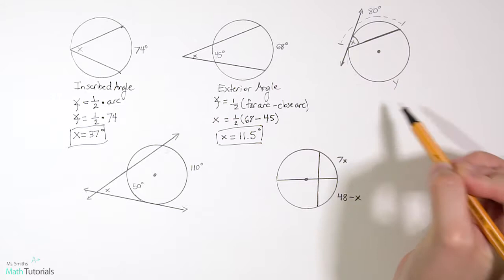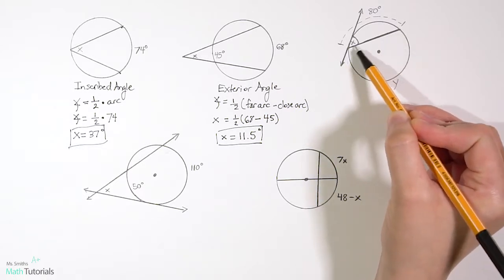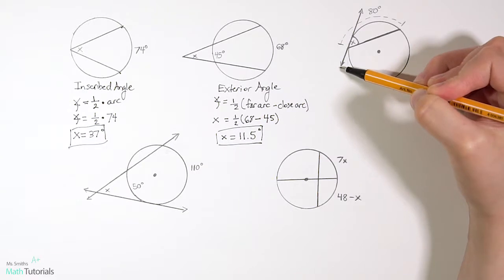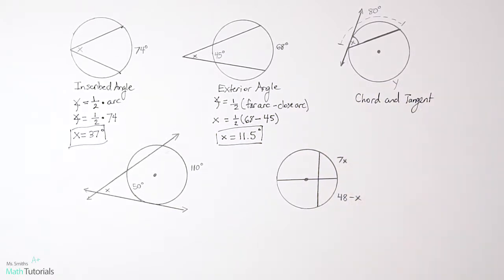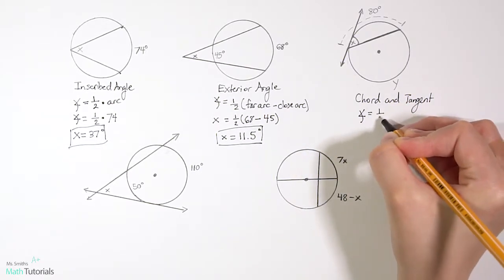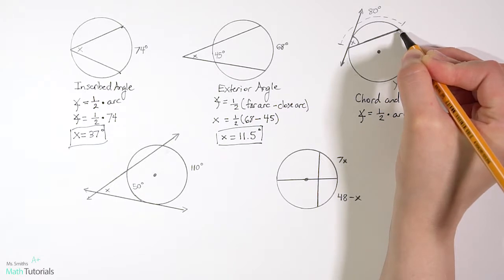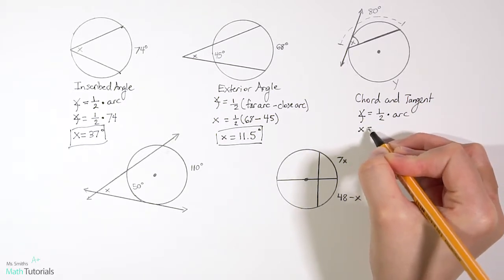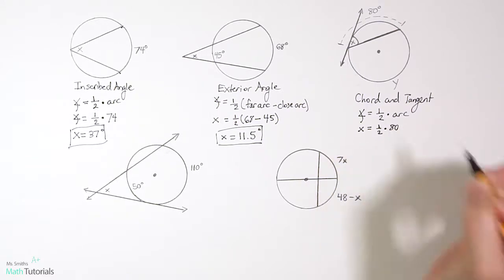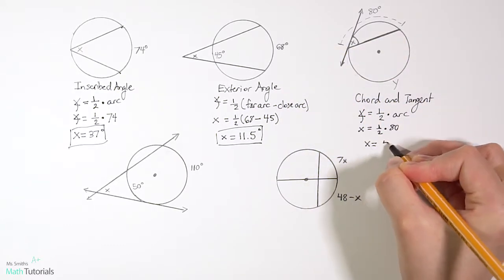In the next example, we have a chord — a segment that crosses the circle but not through the center — and a tangent, a line that just touches the circle and keeps going. This is a chord and tangent. The formula is: angle equals one half times the arc. The arc is 80 degrees, so the angle x equals one half times 80, which gives x equals 40 degrees.